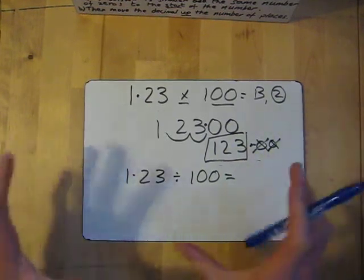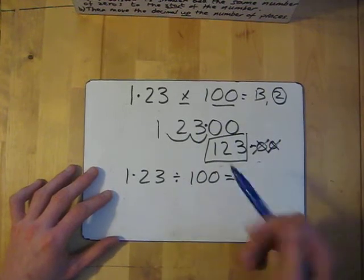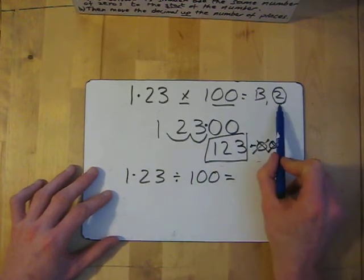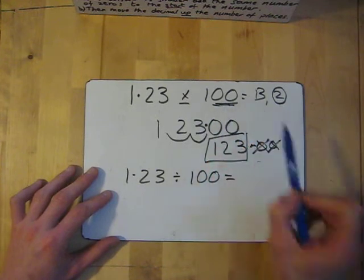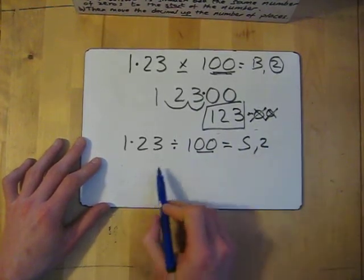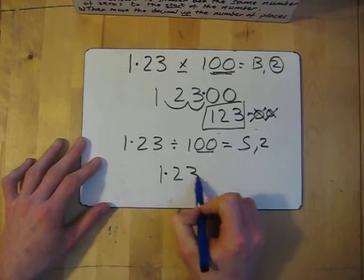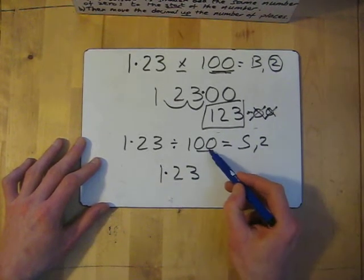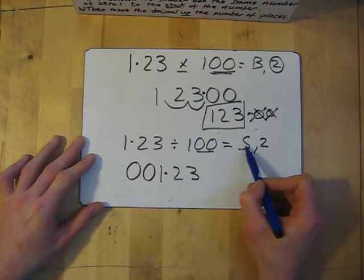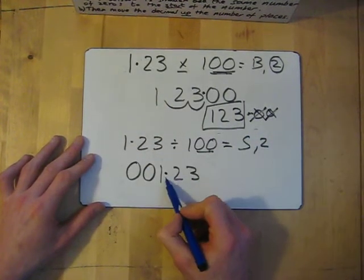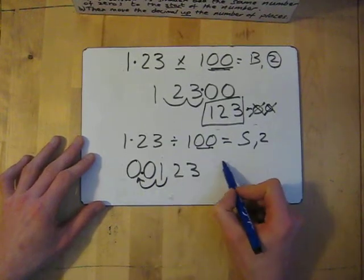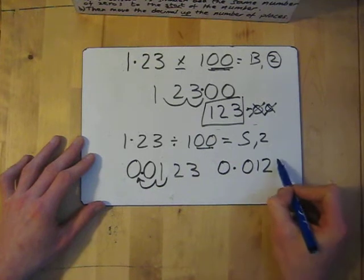The more you do this, the more you'll start to get it. Remember — does it get bigger or smaller? If it's bigger, the decimal point moves down; by how many places is how many zeros there are. So 1.23 divided by 100 — bigger or smaller: smaller. How many places: by 2. Write 1.23, add two zeros to the start of the number. It's getting smaller so the decimal point moves up two places: 1, 2. My decimal point ends up here, so my answer is 0.0123.